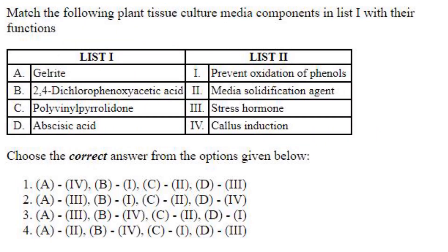The next question asks you to match. Gelrite is a solidifying agent — A2. Since A2 is present only in option 4, we can focus there. 2,4-dichlorophenoxyacetic acid is an auxin used for callus induction — B4.